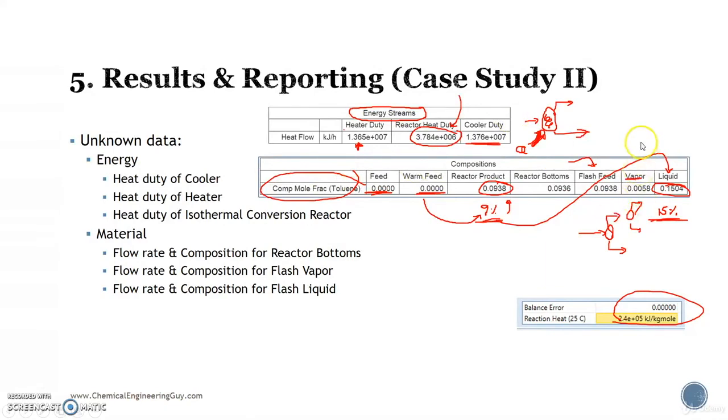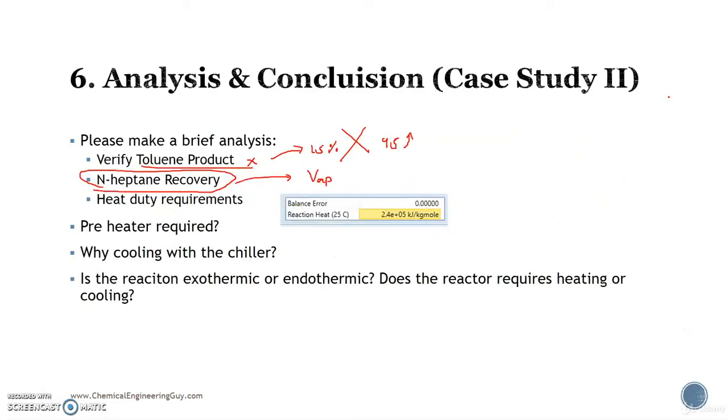The vapor phase is very pure in n-heptane - it has almost 99.5 percentage of n-heptane, so that's okay, that's cool. We are recovering a relatively pure n-heptane right here. Heat duty requirements - we got them previously. Just denote that if this is positive, this implies this is an endothermic reaction.